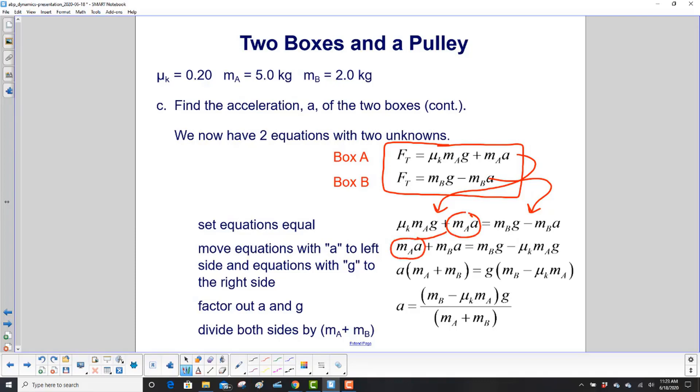Now to get M sub B times A to the left side, what do we have to do? Add M sub B A to both sides so it will cancel out here and show up over here. And we said add so it has a plus sign. So that's good. We've got all our acceleration on the left side.